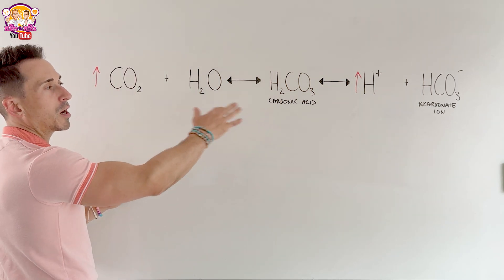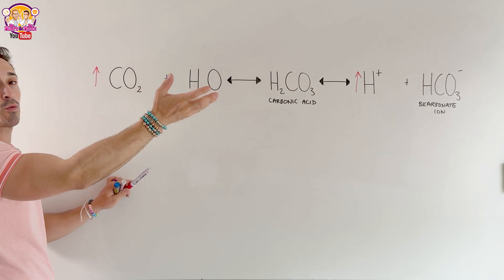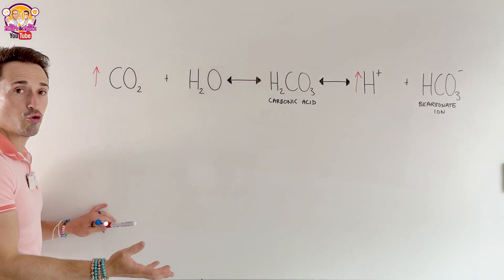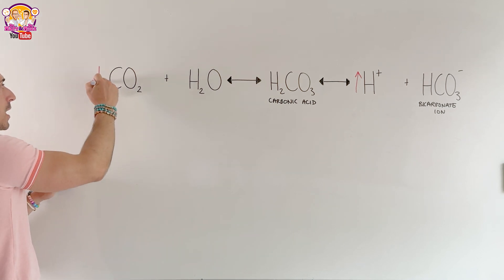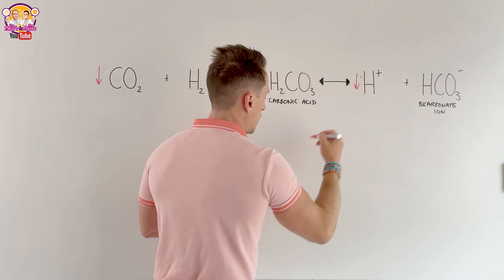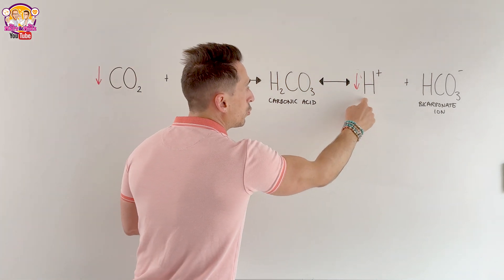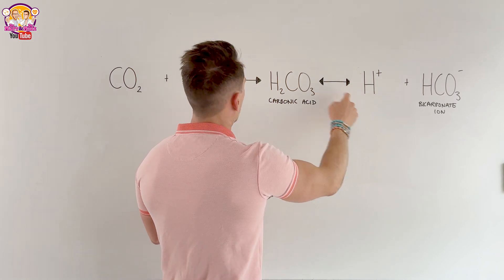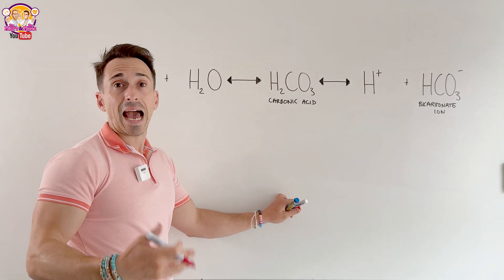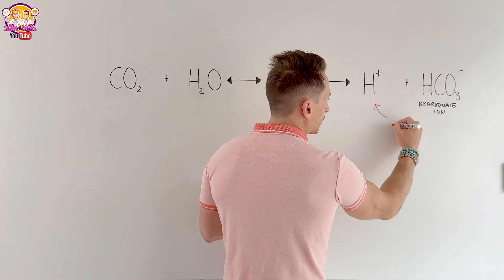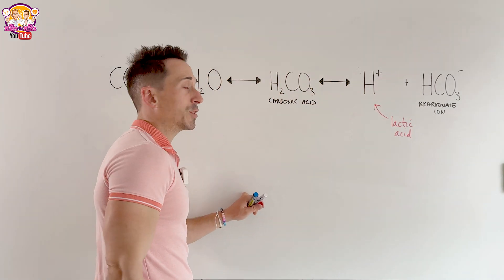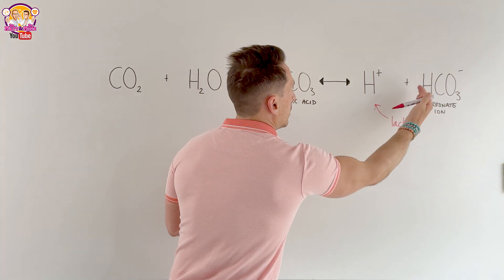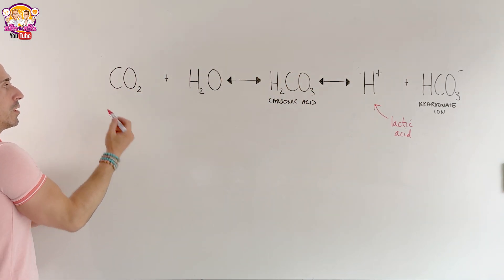Carbon dioxide is called a volatile acid because it can be gotten rid of very easily — we simply breathe it out. Metabolism produces lots of CO2, but it's not stuck in the body. CO2 isn't the only source of hydrogen ions though; for example, lactic acid produced during exercise generates hydrogen ions independently of CO2. As hydrogen ions accumulate, they bind to bicarbonate forming carbonic acid, which forms more CO2 and water.